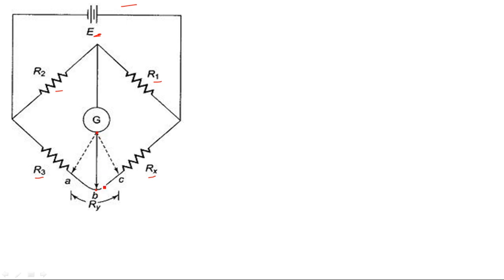If the galvanometer's other end is connected at point A, there is no problem for moderate resistance measurement. But for low resistance measurement, since every lead or wire has some internal resistance, the resistance from A to C will be added to Rx. If connected at point C, that resistance from A to C is added to R3. If connected exactly at the center point B, then the resistance RAB is added to R3, and RBC is added to Rx.